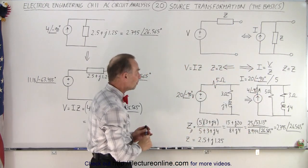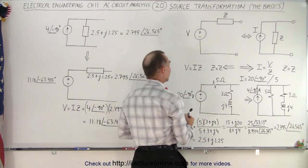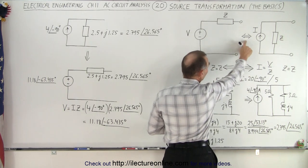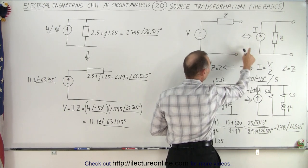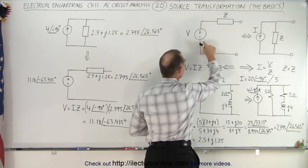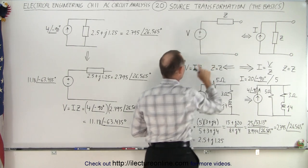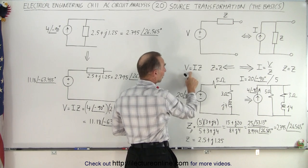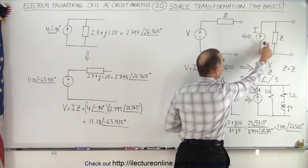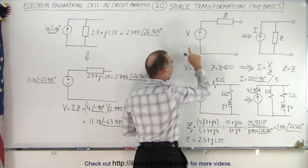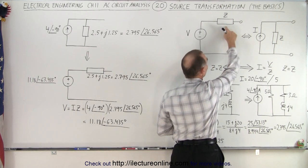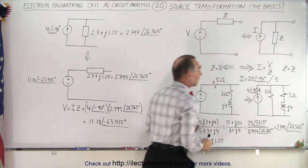How do we make that transformation? It's fairly simple. If we want to go from current to voltage — notice the arrow goes both directions — we can go from a current source with impedance in parallel to a voltage source with impedance in series, simply by saying that the voltage is equal to the product of the current times the impedance. Simply multiply these two and you get the voltage. Notice that the impedance is exactly the same, except here it's in series, and there it's in parallel.